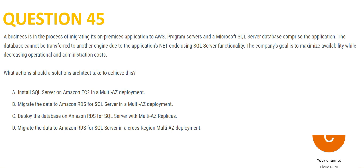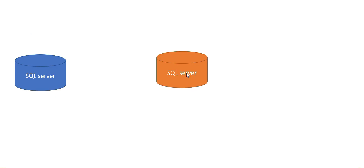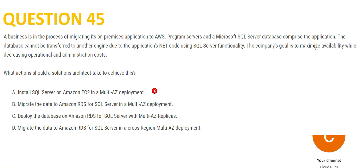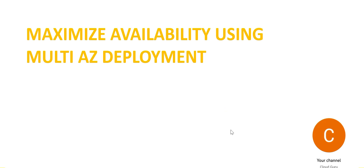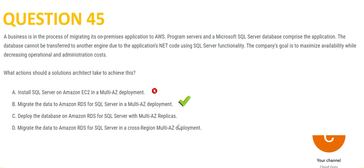Between options B, C, and D: option B says migrate to RDS SQL Server in a Multi-AZ deployment — multiple AZs will be available, addressing the requirement to maximize availability. Option C does the same but as a Multi-AZ read replica — replicas are not required here; there's no need to split reader and writer functionality. Option D says cross-region Multi-AZ deployment — cross-region is not required because this application is not global. We lock in option B as the answer.